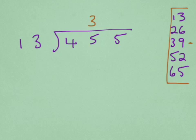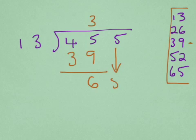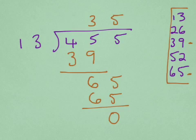So there we have three times, it goes in three times, but the number goes underneath. Then we have a remainder of 6. Bring the 5 down. And then 13s into 65 goes five times, and we have a remainder of 0 at the bottom.